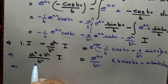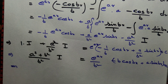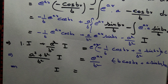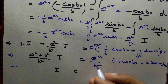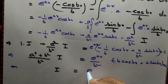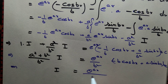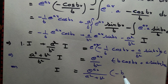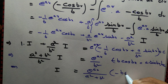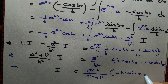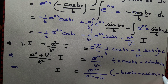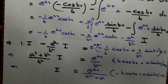Now let's take the constant to the right hand side. We have i, the required integral, equal to — b squared will cancel — e to the power x divided by a squared plus b squared, times the quantity minus b cos bx plus a sin bx, plus a constant of integration.